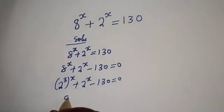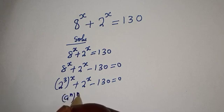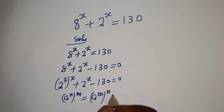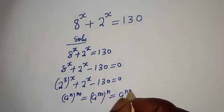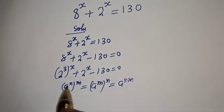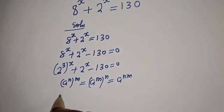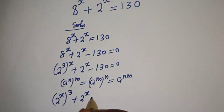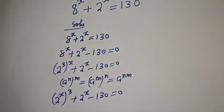If you have a raised to power n to the power of m, this is equal to a raised to power m to the power of n, which equals a raised to power mn. Then 2 raised to power td to the power of s can be written as 2 raised to power s, raised to power td, plus 2 raised to power s minus 130 is equal to 0.